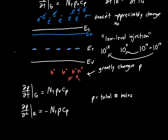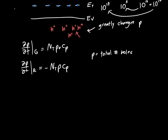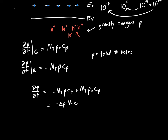Adding recombination and generation together, dp/dt equals −nₜ·p·cₚ + nₜ·p₀·cₚ. We can rewrite this as −Δp·nₜ·cₚ, where Δp is just p minus p₀ — factoring out nₜ·cₚ. This Δp turns out to be really important in analyzing n-type semiconductors, and our differential equation will be formulated in terms of Δp.